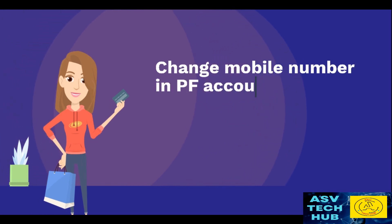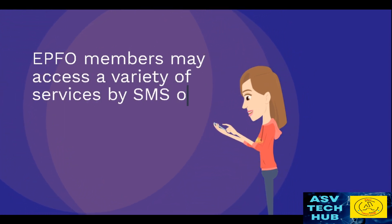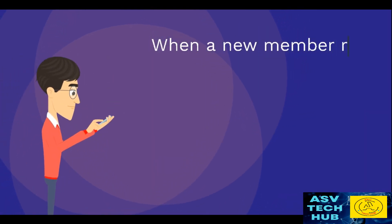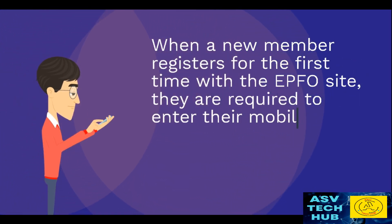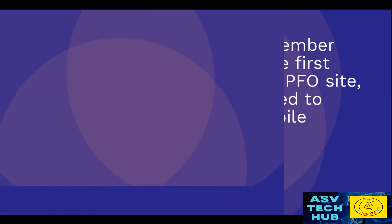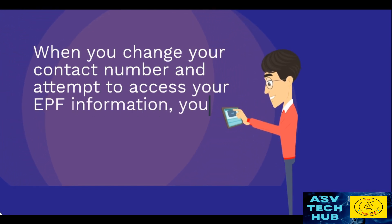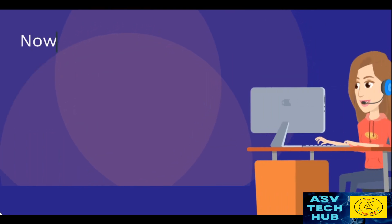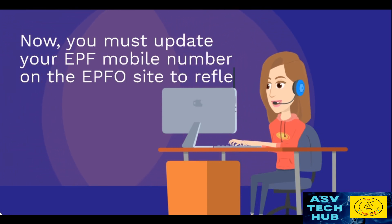Change mobile number in PF account online. EPFO members may access a variety of services by SMS on their registered mobile number. When a new member registers for the first time with the EPFO site, they are required to enter their mobile number. When you change your contact number and attempt to access your EPF information, you find that the previous number was registered with the EPFO. Now you must update your EPF mobile number on the EPFO site to reflect the new number.